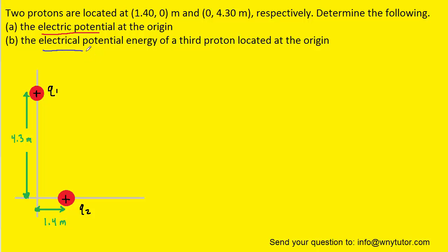Now for part B, to calculate the total electric potential energy of a third proton that's placed at the origin, we have to consider the equation for electric potential energy between two point charges.